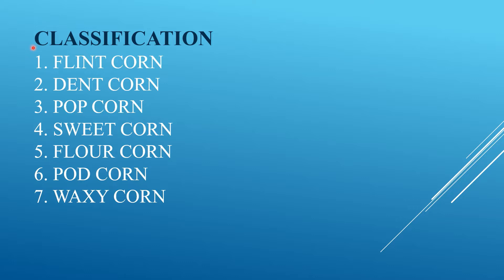Classification of maize: maize can be classified into seven types — flint corn, dent corn, popcorn, sweet corn, flour corn, pod corn, and waxy corn. This classification is based on the cultivation of maize.